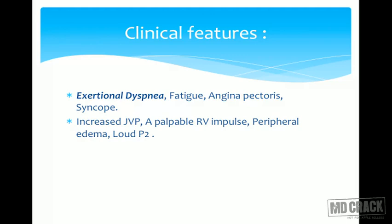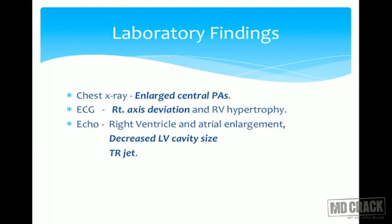There will be increased jugular venous pressure, a palpable liver, and peripheral edema. On auscultation of the right side of the heart, you may find a right-sided S4. There will also be a loud P2. All these indicate right-sided failure and suggest severe pulmonary hypertension.